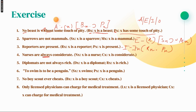Please keep in mind: the word 'always' also appears here. 'Nurses are always conscientious' — 'always' here means A proposition. So this is A proposition — write NX horseshoe CX. Next: 'Deployments are not always rich' — here 'not' and 'always' appear together, meaning some deployments are not rich. That is O proposition. And 'To swim is to be a penguin' — this will be A proposition. You have to make sense of what the sentence means and understand its meaning.